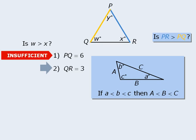Now on to statement 2. Here we are told that side QR has length 3, so we can add this to our diagram. Now does this provide enough information to answer our new target question? No.